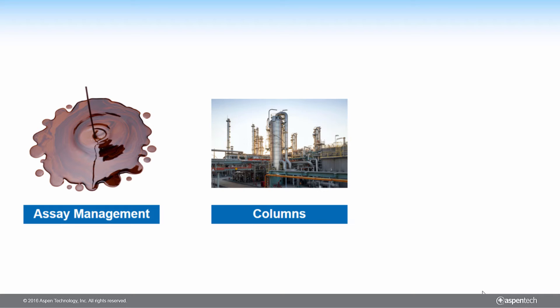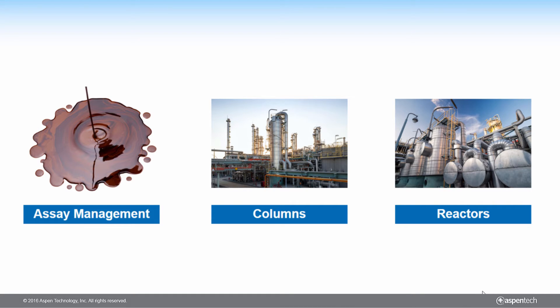Aspen HySys offers shortcut column models that use the same method as those in Aspen PIMS to represent fractionation units, enabling users to easily mimic the column operation as represented in Aspen PIMS. Aspen HySys also offers shortcut reactor models that are an exact replica of Aspen PIMS reactor submodels, enabling a one-to-one copy of Aspen PIMS reactor submodels in Aspen HySys.